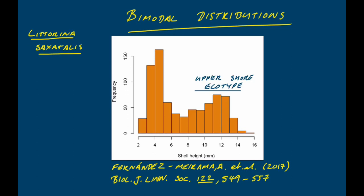It turns out there are two different ecotypes of this periwinkle species. Some are large and robust, living on the upper shore where they face crab predation and grow large, heavily ridged shells. A second ecotype lives on the lower shore and is adapted to resist wave action rather than predation — they are much smaller. If you sampled just from the upper or just from the lower shore you'd find a unimodal distribution, but in the middle of the shore both ecotypes mix, giving a bimodal distribution. So if you see a bimodal distribution, ask yourself why — why are there two groups of data points and what is causing that?